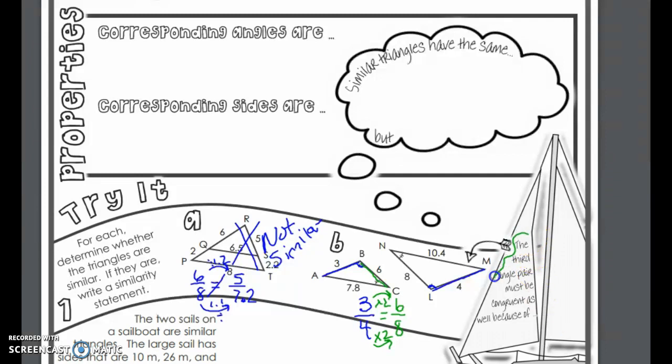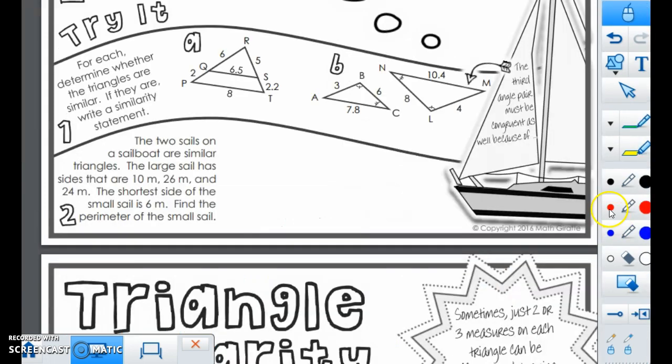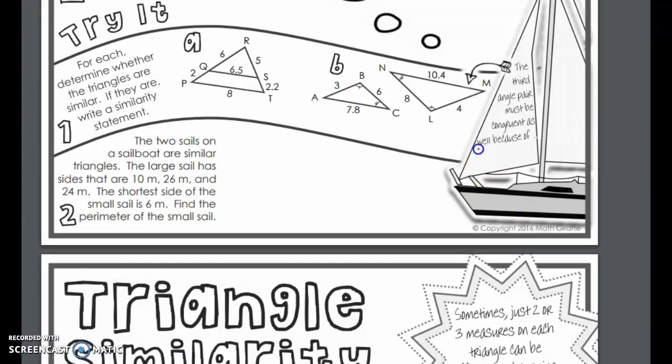Notice it says the third angle pair must be congruent as well because of... I'm going to pause this for a second. Let's think about it. Because of... Did you know? Of course you didn't know. It's the triangle sum theorem. Yeah, I wonder if we'll hear that too much.